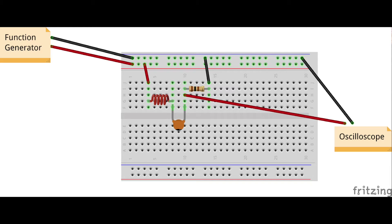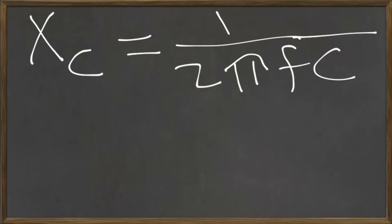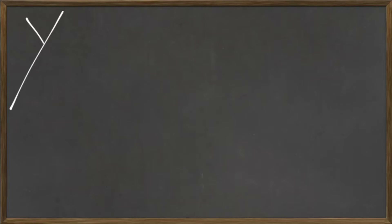We'll be using the capacitor and inductor in series to create bandpass and band reject filters. Reactance is the resistance to current flow in an AC circuit. The reactance of a capacitor is 1 over 2π times frequency times capacitance — an inverse relationship with frequency. For an inductor, the reactance is 2π times frequency times inductance in henrys — a direct relationship with frequency. Reactance is measured in ohms.